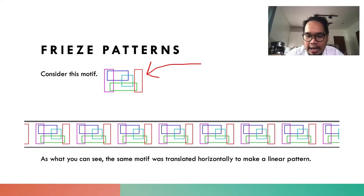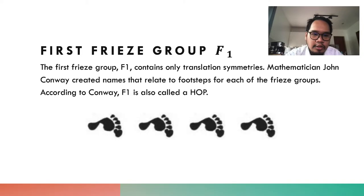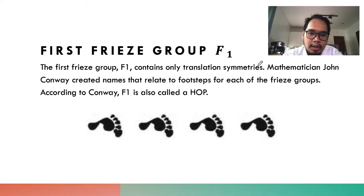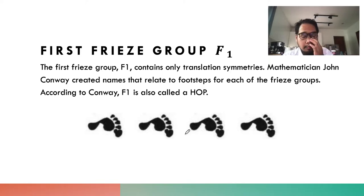We will have seven frieze groups to investigate. This is the first frieze group, F-sub-1. F-sub-1 contains only a translation symmetry. Mathematician John Conway created names relating to footsteps for each of the frieze groups, and he called F1 a 'hop.' Imagine you're hopping on one foot — that is frieze group F1.